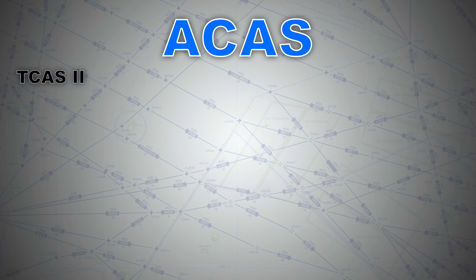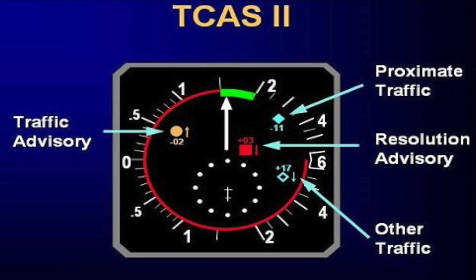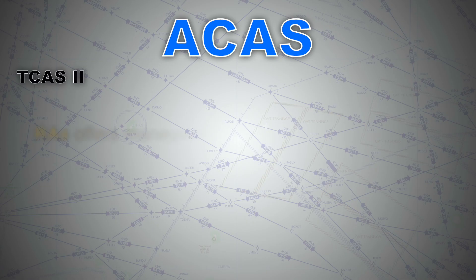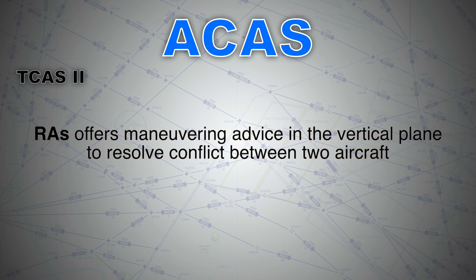TCAS 2 detects intruders in the aircraft's vicinity, assesses the collision risk, and presents warnings to the crew in the form of TAs (traffic alerts) and RAs (resolution advisories), such as 'climb, climb, climb' and so on. The resolution advisory offers maneuvering advice in the vertical plane to resolve conflicts.